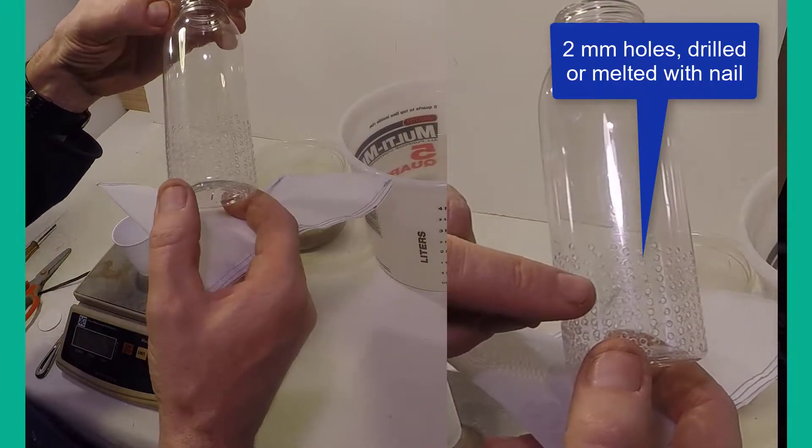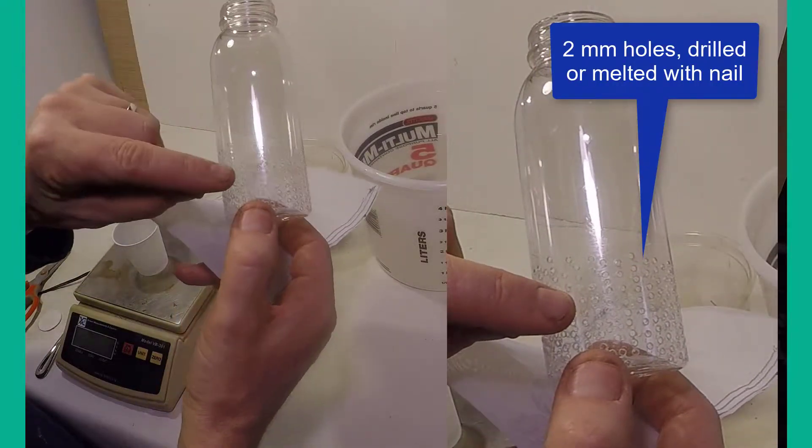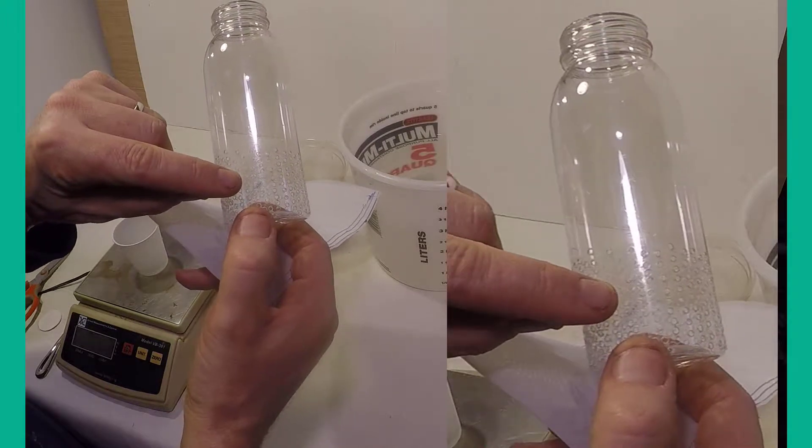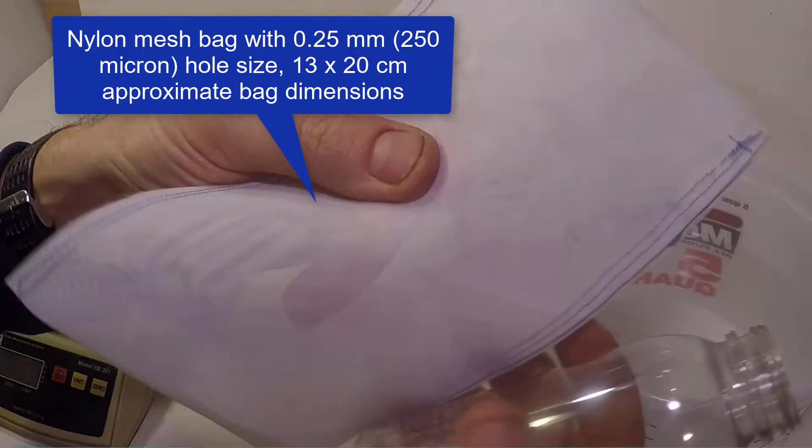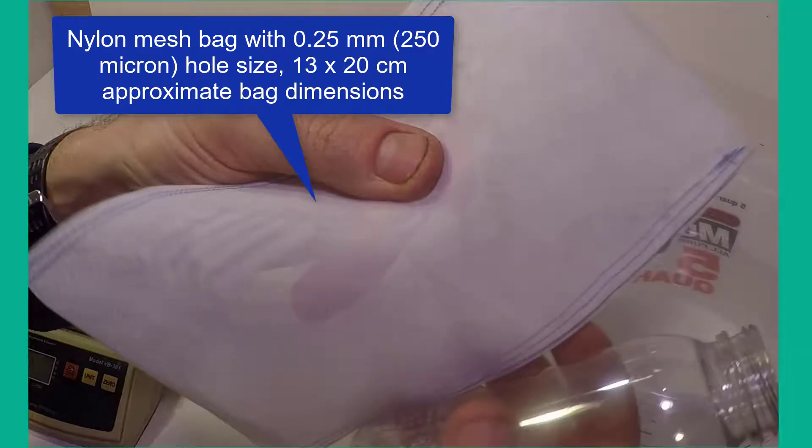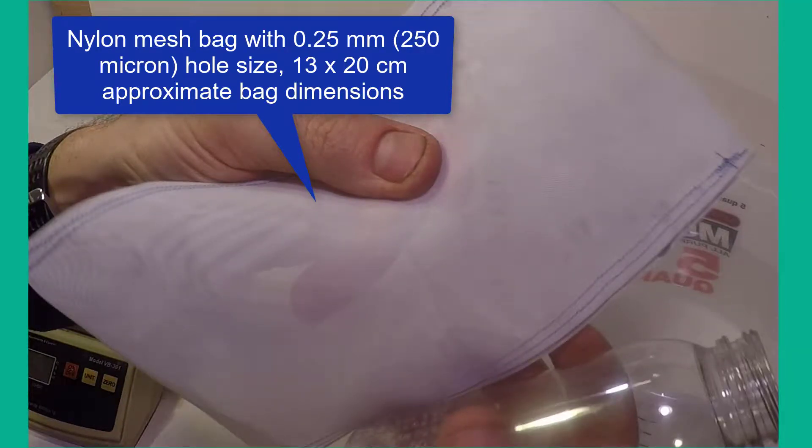For the washing of the soil, you will also need a small plastic bottle with 2-millimeter holes drilled around the bottom. A mesh bag is also needed, sewn from mesh with a hole size of 250 microns.